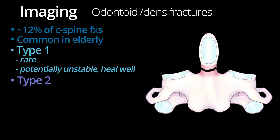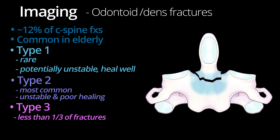Type 2 fractures are the most common and occur at the base of the odontoid. These fractures occur below the transverse ligament. Type 2 fractures are unstable and have a high risk of non-union and poor healing. Type 3 fractures make up less than one third of the odontoid fractures. These occur through the odontoid and extend into the lateral masses of C2. Type 3 fractures are relatively stable if there is not significant displacement of the fracture fragments. Type 3 fractures tend to heal better than type 2 fractures because they have a larger bony contact area and better vascular supply.